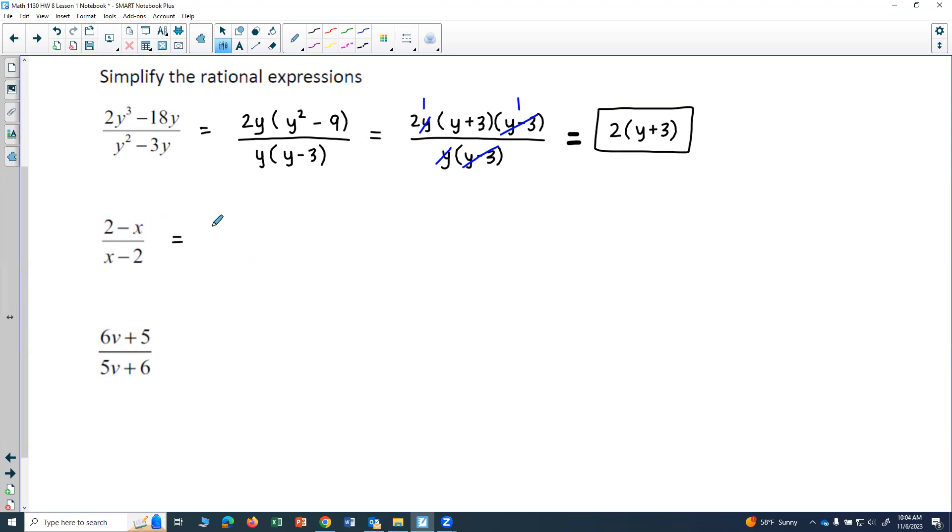I would need to have the same signs on the numbers. But I can actually accomplish that if I factor out a negative 1 from the top. So if I factor out a negative 1, this would become negative 2 plus x. It would switch the sign of each term in the parentheses. So I have negative 1 times parentheses negative 2 plus x. And then in the denominator, I have x minus 2.